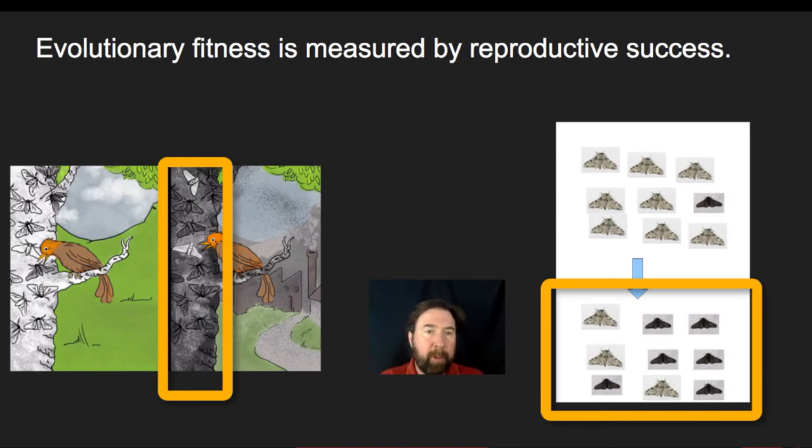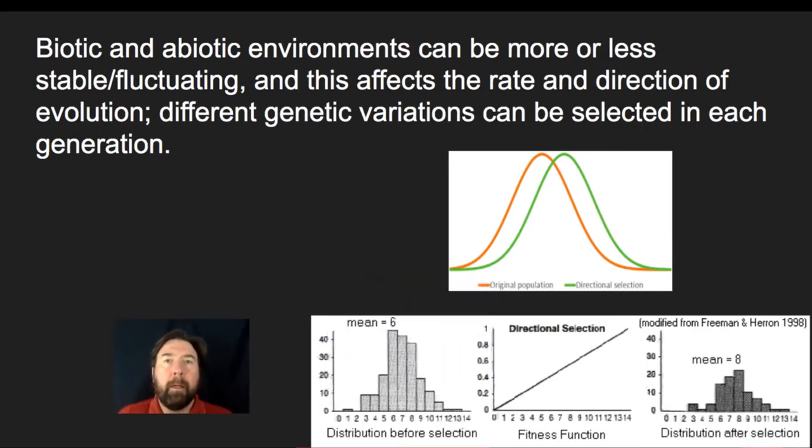That would be in this instance because of selection by predators who could initially, during the time where there was less pollution, more easily see the dark moths. But after a period of pollution, they could more easily see the white moths.